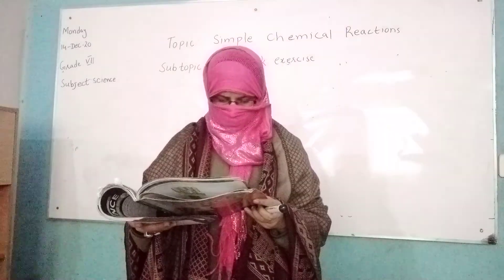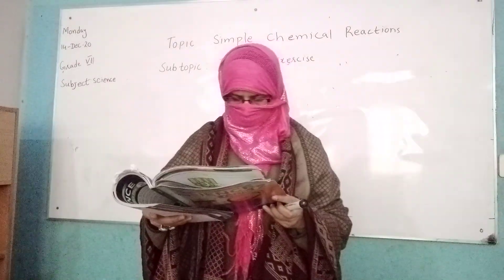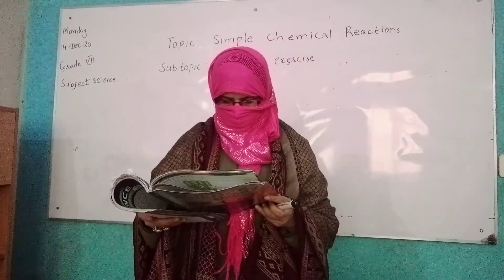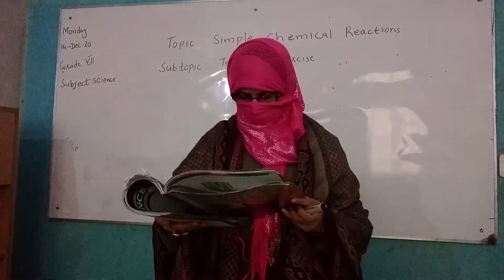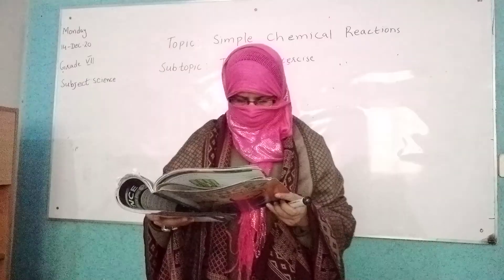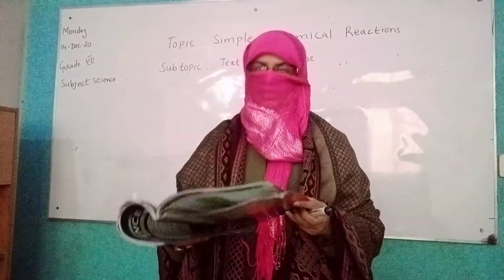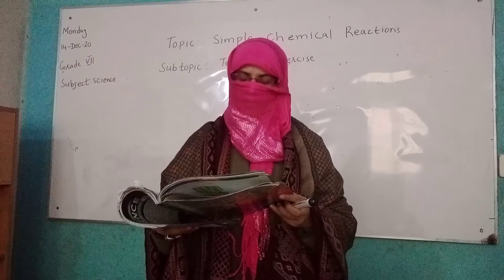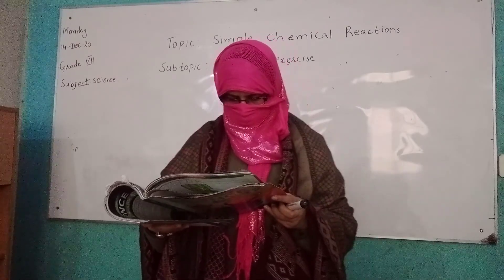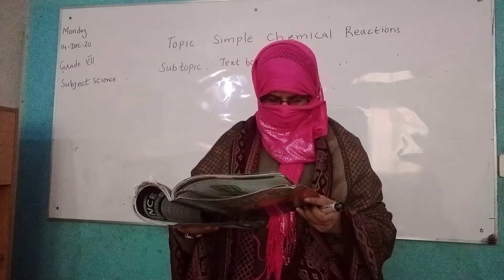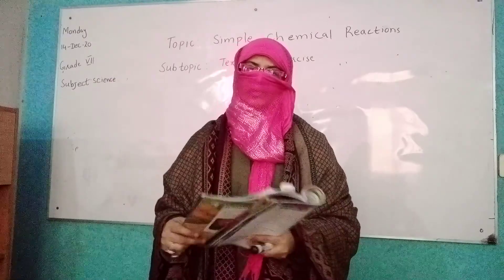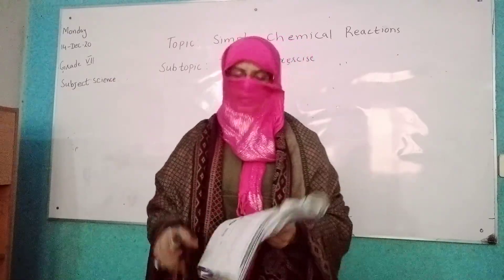Now the True or False section. Number 1: Lime water turns milky when carbon dioxide is bubbled through it — true. Number 2: During a displacement reaction, one substance combines with another substance to make a completely new substance — true. Number 3: To burn, a fire needs only a fuel, oxygen, and heat — it is the burning triangle, true. Number 4: Decomposition is the breaking up of a single compound into two or more simple products — true. Number 5: Glucose is a fuel used by the human body to produce energy — obviously, we get energy from food — true.